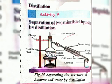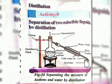Sometimes a homogeneous solution is formed by the mixing of liquids. Some liquids have the property of mixing in all proportions, forming a homogeneous solution. This property is known as miscibility.